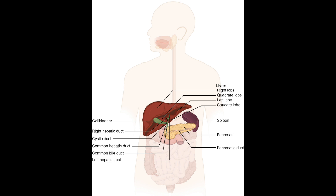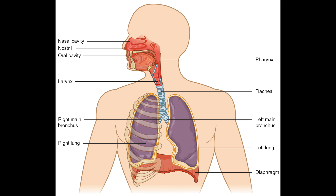Epithelial tissue covers the inside of the stomach. So those are the three tissues that make up the stomach, which is an organ.